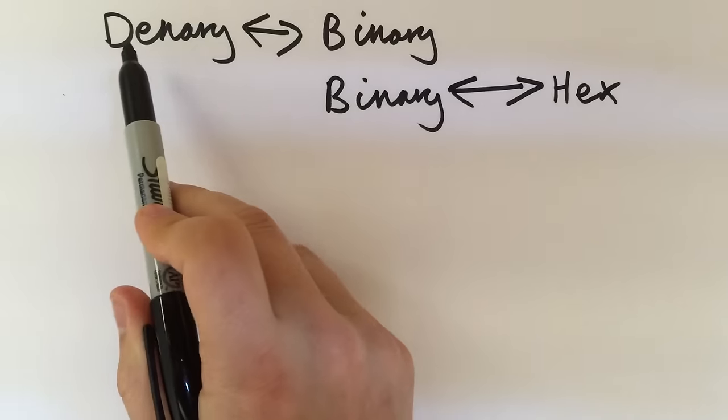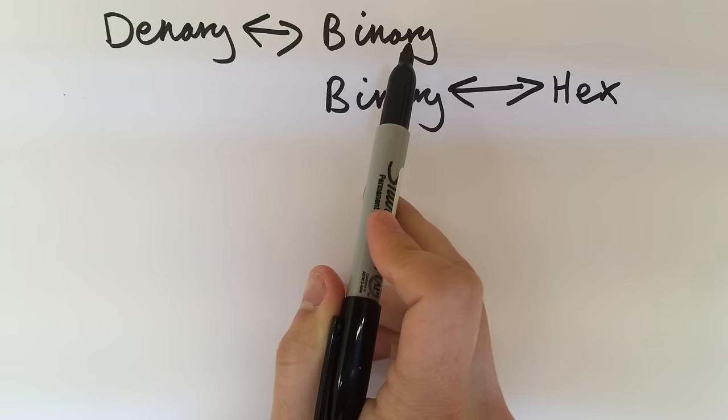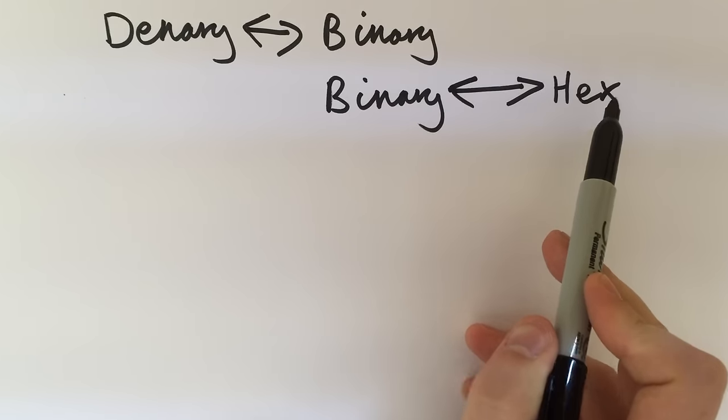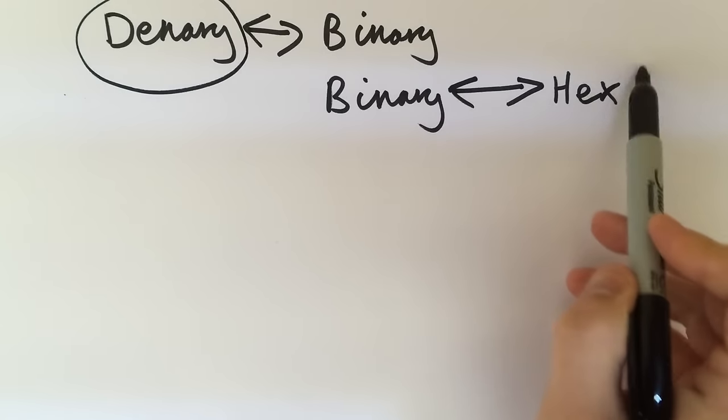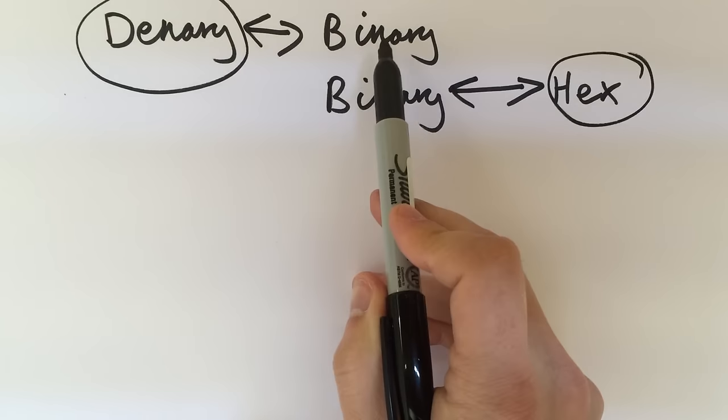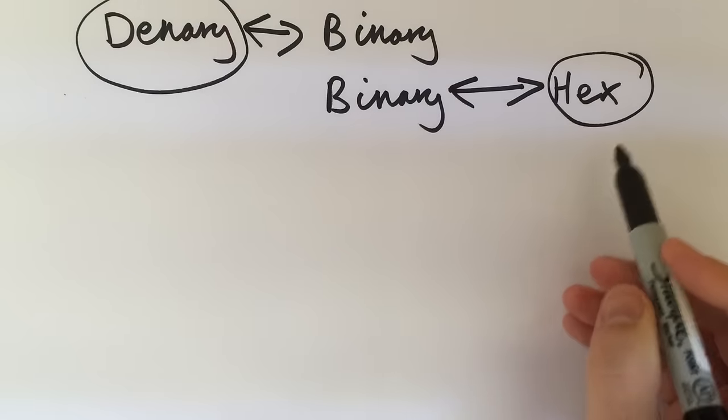So hopefully we can see the system that if we can convert from a denary to a binary and from a binary to a hex, then we could actually take any denary number and convert it into a hexadecimal number by first converting it into binary. And this also goes the other way.